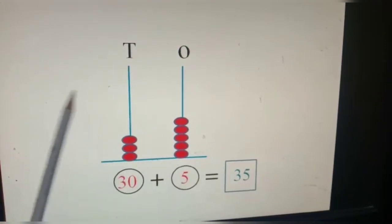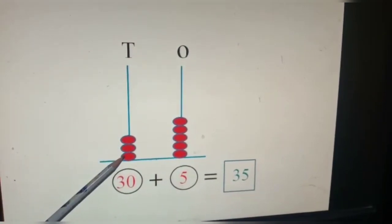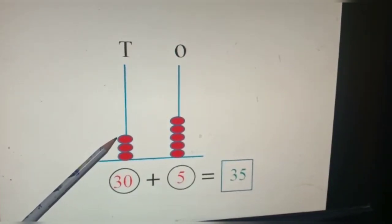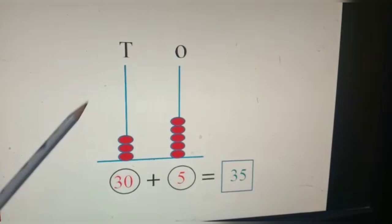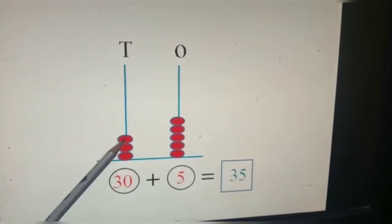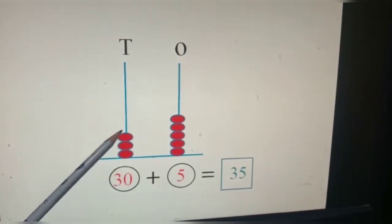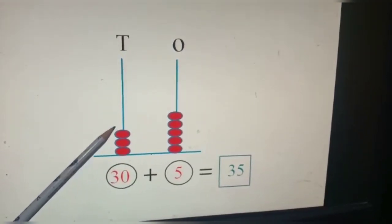Now, let's count the beads in the tens place. Here we have one, two, three beads. But because this is tens place, we count this as one ten is ten, two tens, twenty, three tens, thirty.